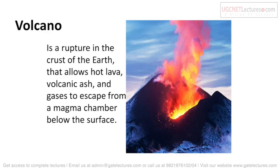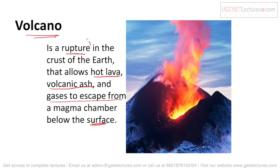Next we talk about volcanoes. Volcanoes are basically ruptures in the crust of the earth that allow hot lava, volcanic ash, and many gases to come from the magma chamber below the surface. When the earth's crust ruptures — rupture meaning a hole or crack — the gases, lava, ash, and other materials inside escape outward. That is what we call a volcano.